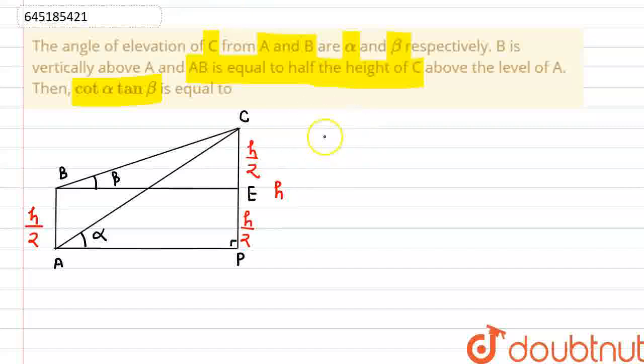Now, if we see in triangle APC, I will take the cot of alpha. So cot alpha will be base by perpendicular. So here our base is AP divided by perpendicular which is PC.